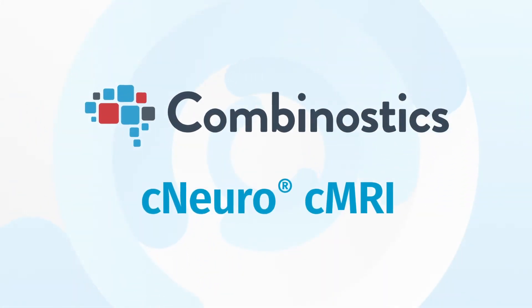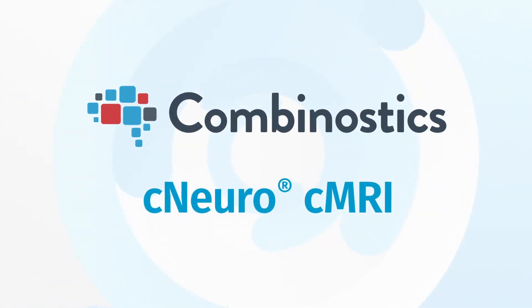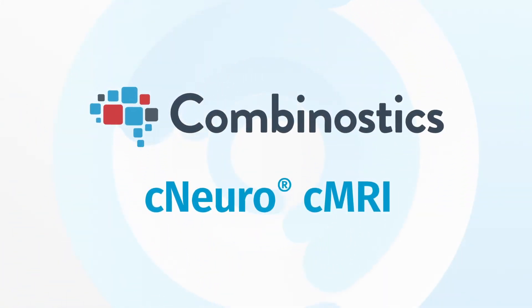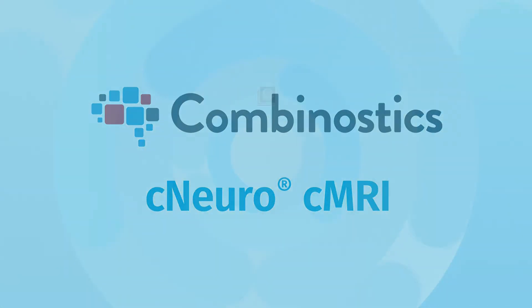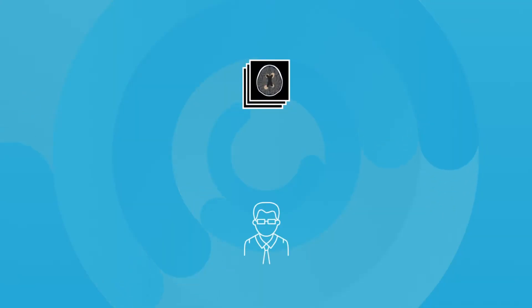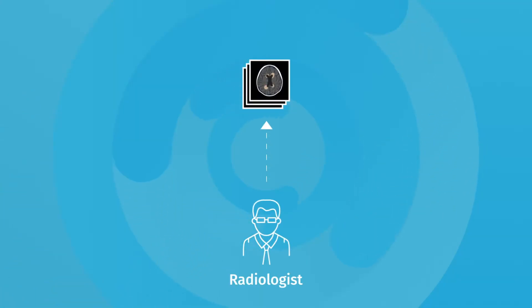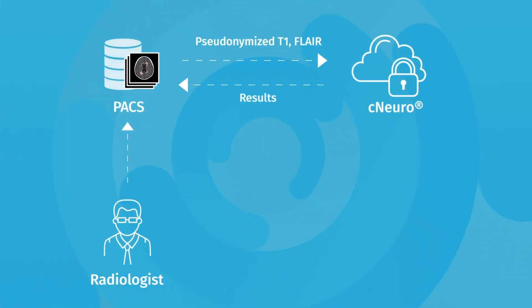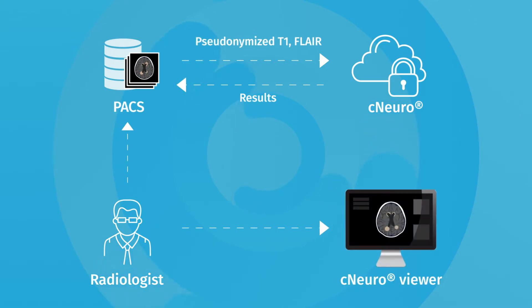CNeuro-CMRI is a disease-agnostic image quantification tool that can be used whenever you want to perform volumetric analysis of T1 and FLAIR brain images. CNeuro-CMRI integrates with your PACS, but you can also review the results using our browser-based viewer.